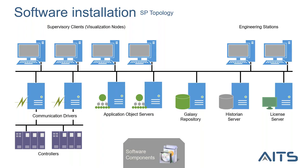The topology includes communication drivers, galaxy repository, historian server, etc. This can be big or small depending on your application — one project I found had 75 different application object servers. Regarding all-in-one installations, we don't recommend it. We always recommend that the galaxy repository and historian server be on two separate servers, separated from the runtime. We also recommend that in the case of a non-telemetry server, the communication driver and application object server be installed on the same PC.